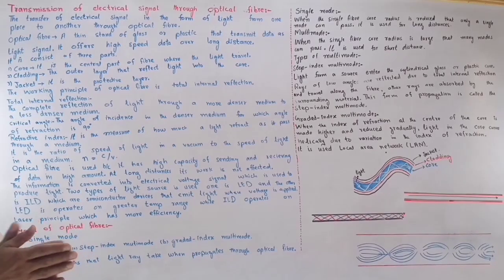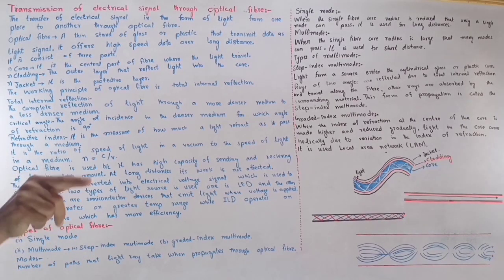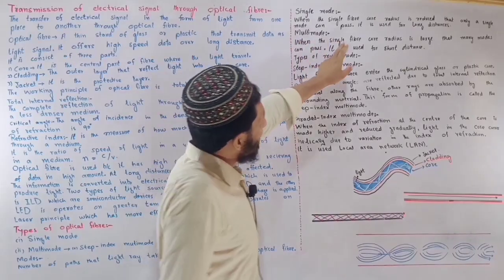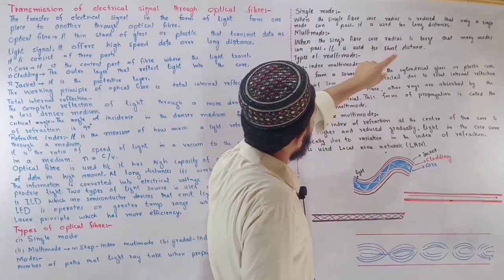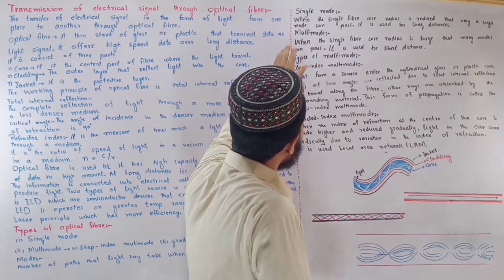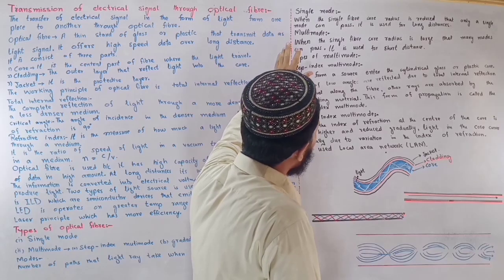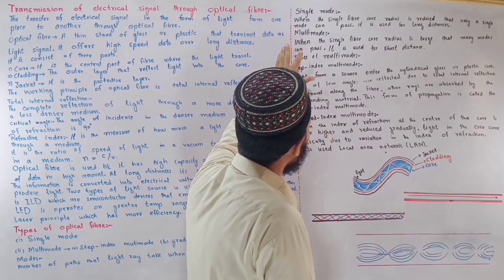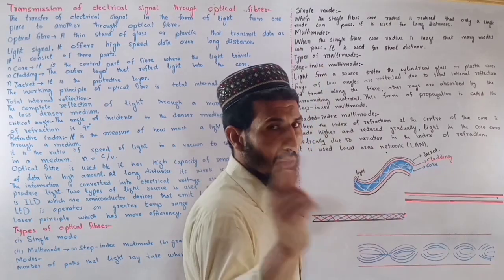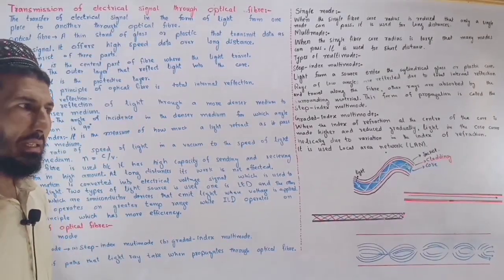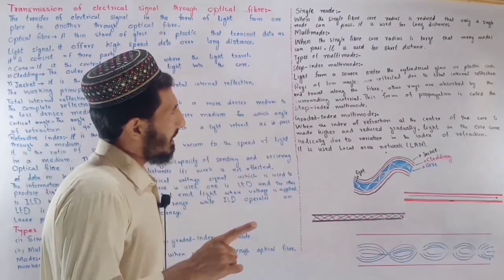Single-mode fiber: when the fiber core radius is reduced so that only a single mode can pass. It is used for long distances. Only a single light signal passes through at a time, making it suitable for long-distance communication.